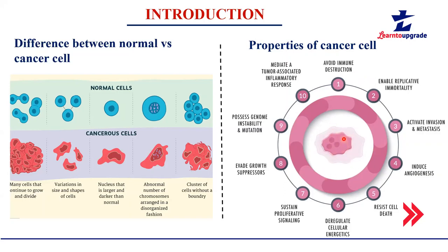If one cell divides into 10, we can control it through regulatory mechanisms. But if one cell is dividing into 50 to 100 cells, there is no regulatory mechanism to control those divisions. Cancerous cells also have a very good ability to move from one cell to another, from one tissue to another, from one organ to another. That's how cancer spreads all over the body — a phenomenon called metastasis.